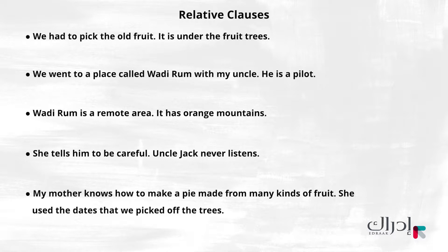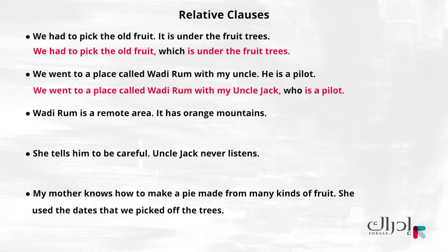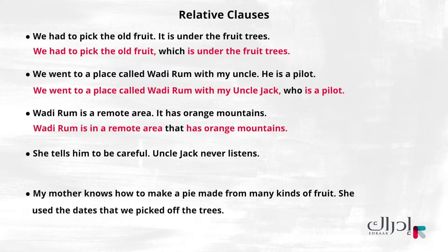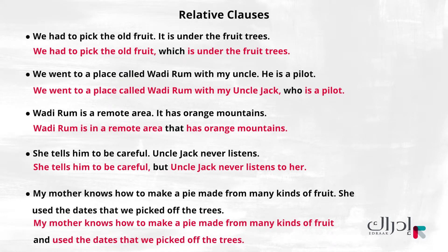Each of these two sentences can be combined into one sentence. Can you do it? 'We had to pick the old fruit, which is under the fruit trees.' 'We went to a place called Wadi Ram with my uncle, who is a pilot.' 'Wadi Ram is in a remote area that has orange mountains.' 'She tells him to be careful, but Uncle Jack never listens to her.' 'My mother knows how to make a pie made from many kinds of fruit, and used the dates that we picked off the trees.'